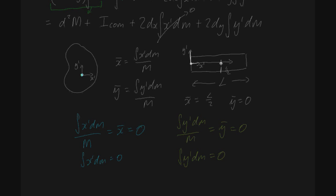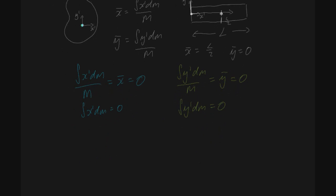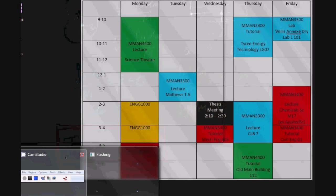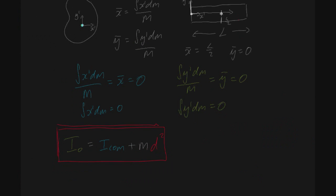This leaves us with our final result: the moment of inertia taken around point O equals the moment of inertia around the center of mass plus the mass of the object times d squared — the square of the direct distance between our two parallel axes. This is the parallel axis theorem. In the next few videos I'm going to show you how to actually calculate the moment of inertia around different parts of objects which aren't the center of mass.